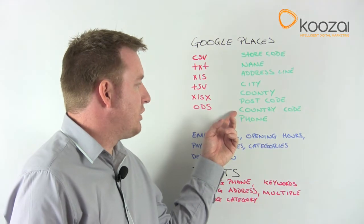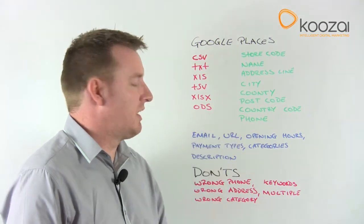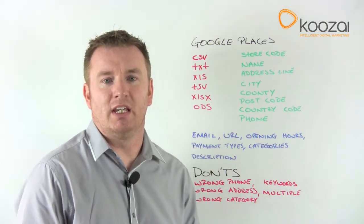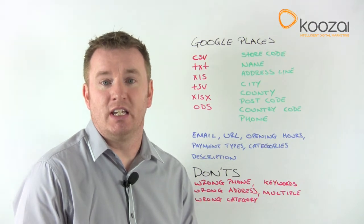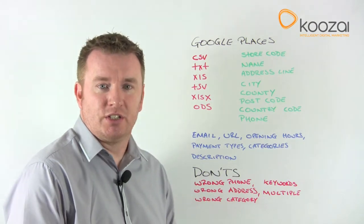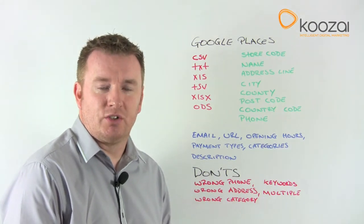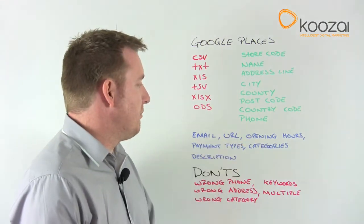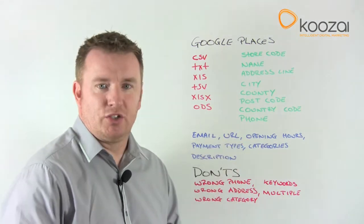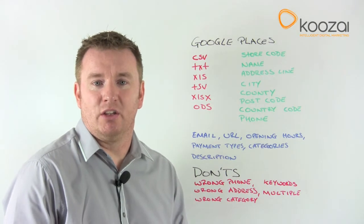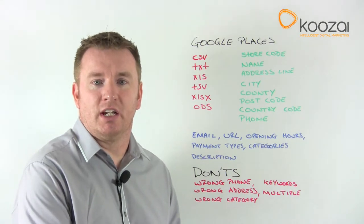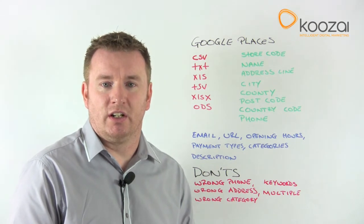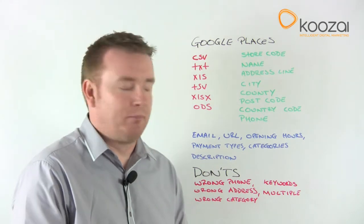The country code should be set up in the way that Google requires. For example, the UK is GB and the USA is US, so make sure you do a search to confirm you're using the correct country code. For the phone number, make sure it is exactly the one relevant to that location — don't use a call centre number or any generic number.